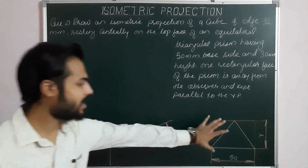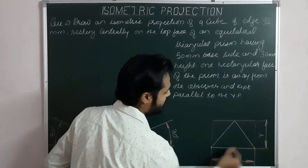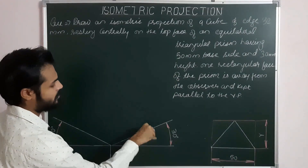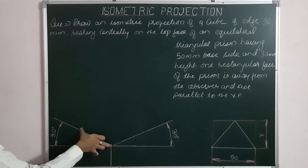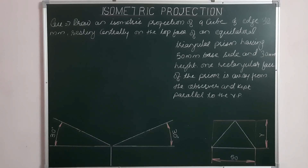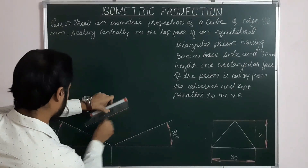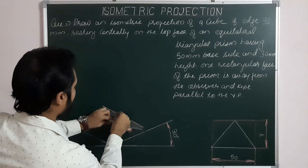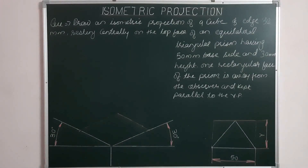We now project the triangular base onto the isometric horizontal plane. We take the length x — that is, 50 — along the first ISO axis, and y along the second ISO axis. Then we draw lines parallel to the first and second ISO axes from both points to complete the helping box on the isometric horizontal plane.